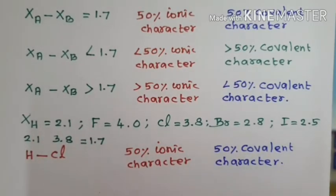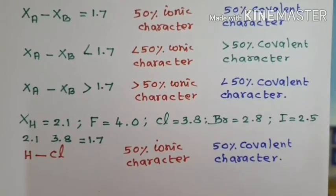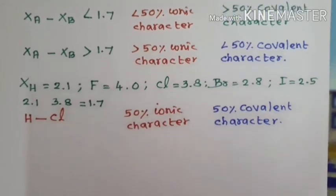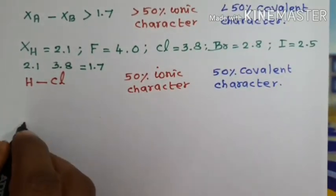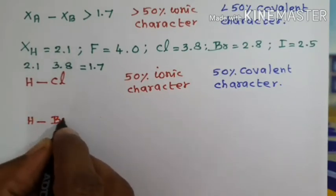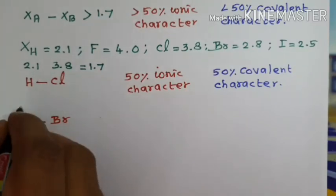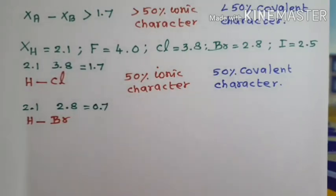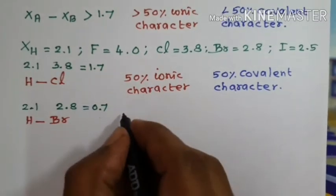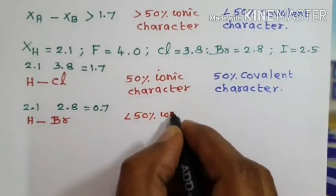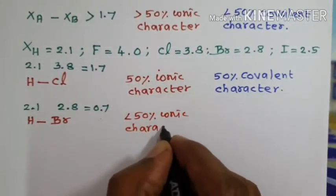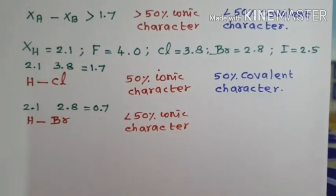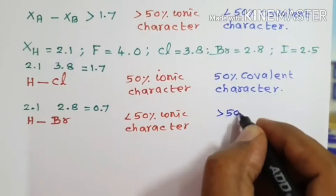For the second condition where the electronegativity difference is less than 1.7, we take HBr. Hydrogen electronegativity is 2.1 and bromine is 2.8; their difference is 0.7, which is less than 1.7. Therefore, HBr has less than 50% ionic character and greater than 50% covalent character.